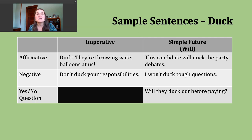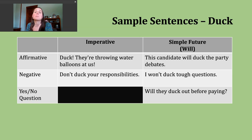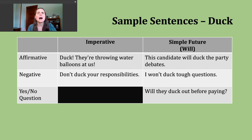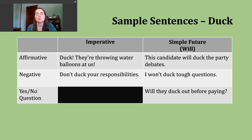An affirmative example might be: this candidate will duck the party debates — meaning they're going to avoid participating in it, which could be a prediction. For a negative simple future sentence, use subject + will not + base verb, or the contraction won't. For example: I won't duck tough questions — still using that avoid meaning. Different leaders sometimes make this kind of promise when they take on a new role, saying you can ask hard questions and I'm not going to avoid them.